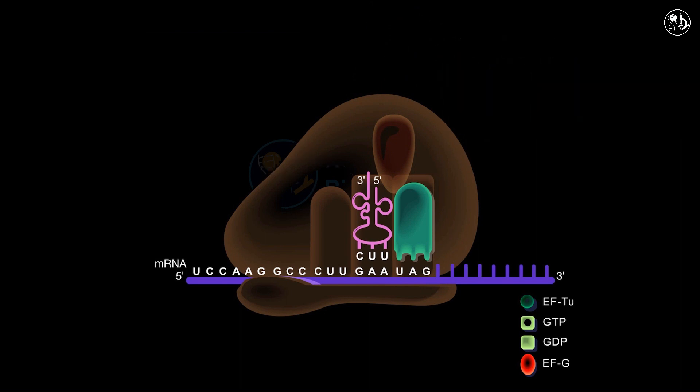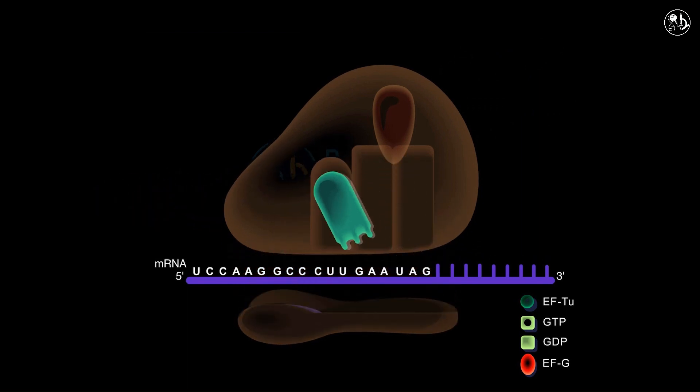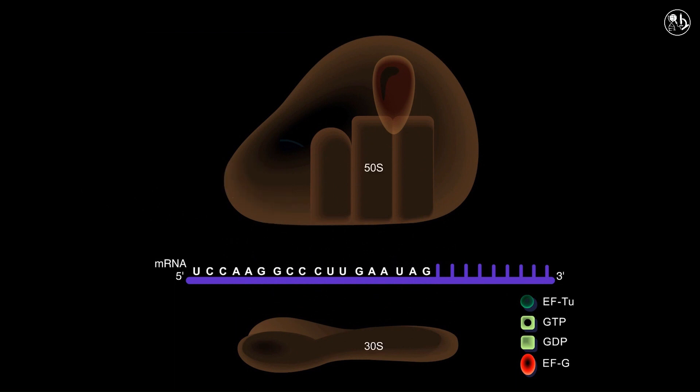Subsequently, the tRNA is removed from the P site of the ribosome, which is then followed by the release of the RF and the disassembly of the 70S ribosome from the mRNA. Finally, the ribosome disassembles into its separate 30S and 50S subunits.